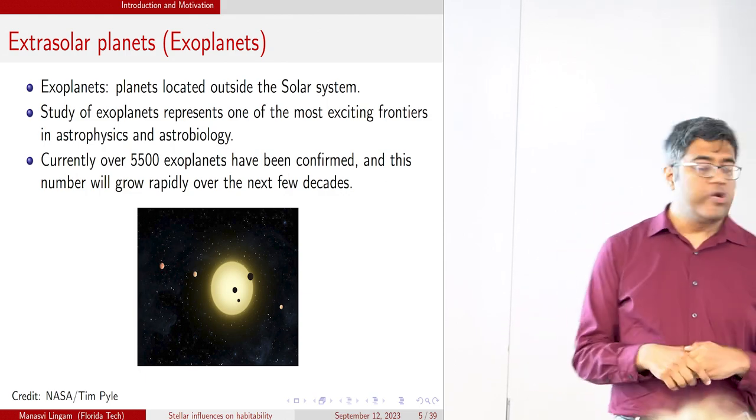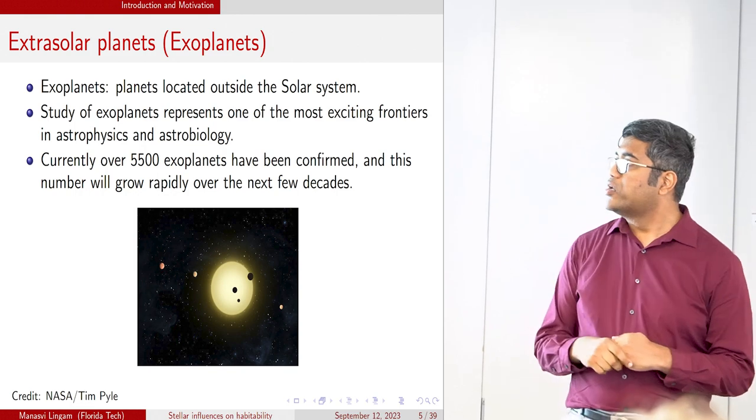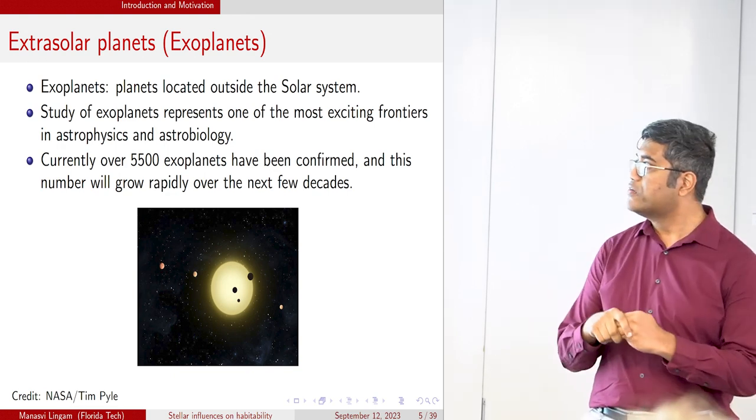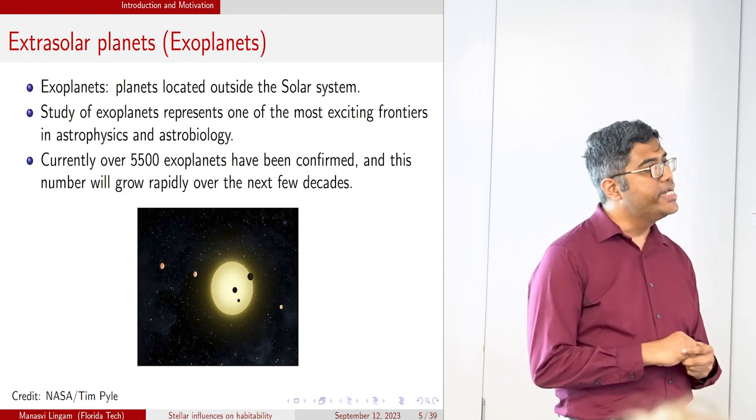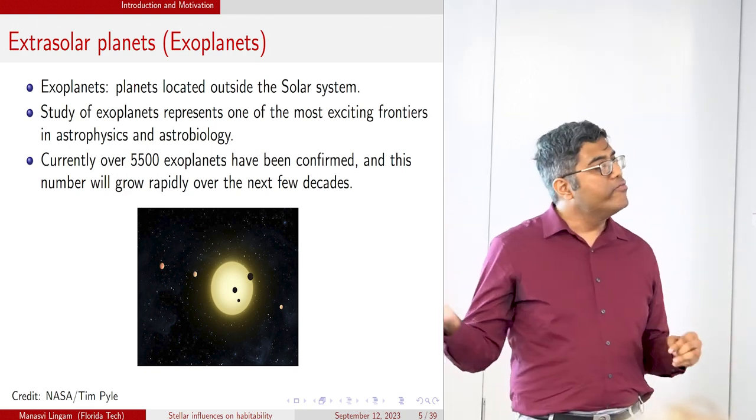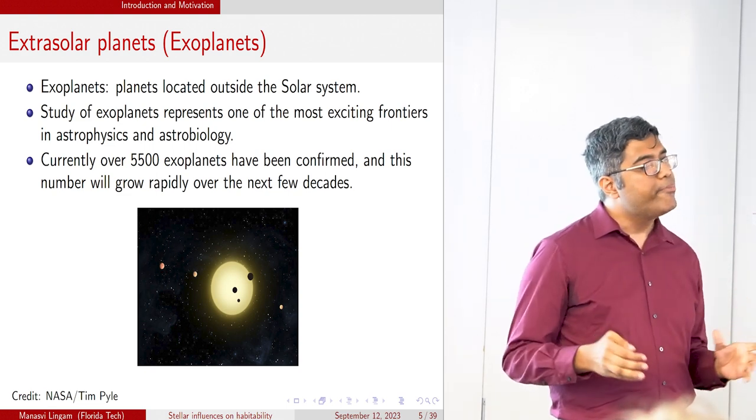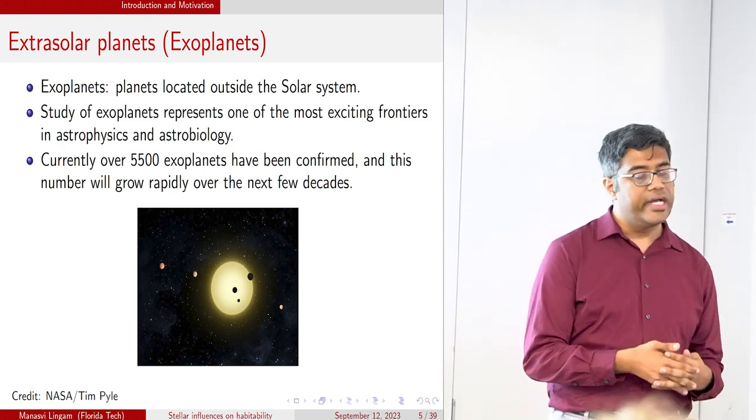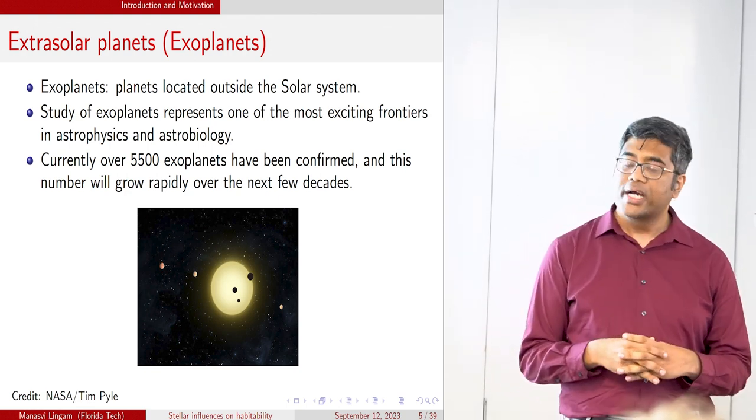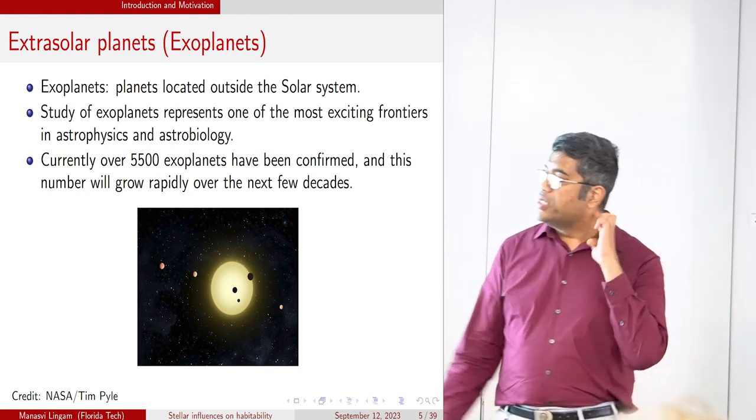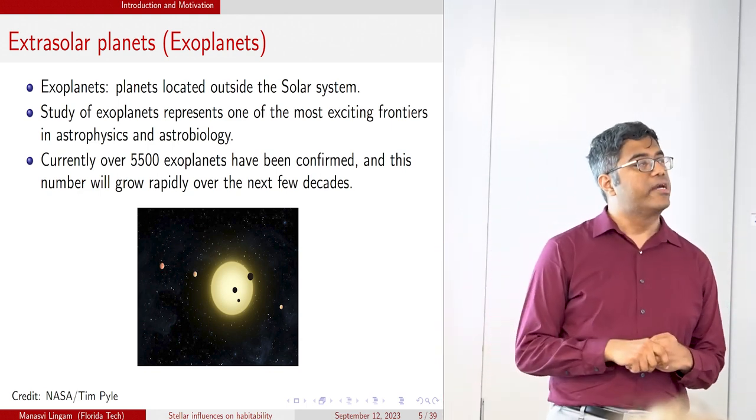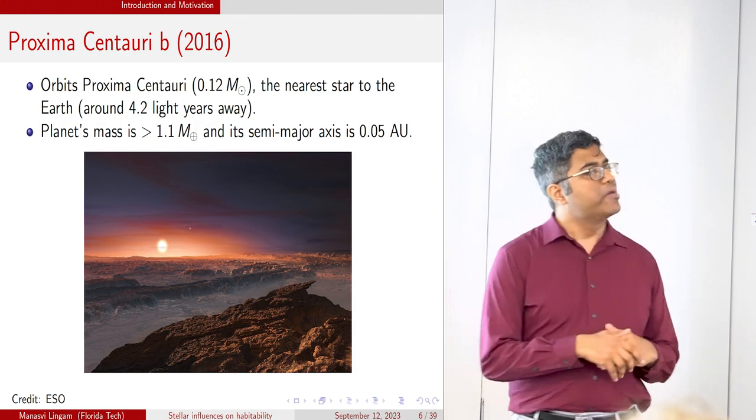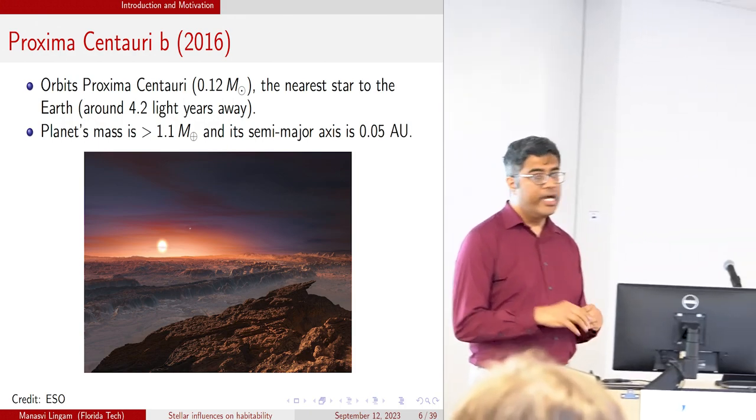That brings us to the question of what are exoplanets. As we all know, exoplanets broadly refer to planets that are situated outside the solar system. The history of speculations about exoplanets extends thousands of years, but the very first exoplanets were detected from the early 1990s onwards. Now, the study of exoplanets is one of the rapidly growing areas in the field of astronomy and also in related fields. Over 5500 exoplanets are known, and with all the new telescopes that are coming up, this number is expected to grow substantially. Here we see an artist rendition of one particular exoplanetary system.